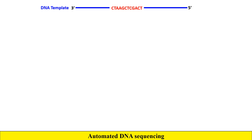Automated DNA sequencing is based on the principle of the Sanger method of DNA sequencing, also called the chain termination method or dideoxy method. We start with the DNA template — this is the molecule of DNA whose sequence we want to determine.